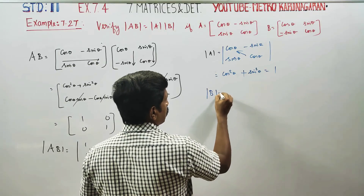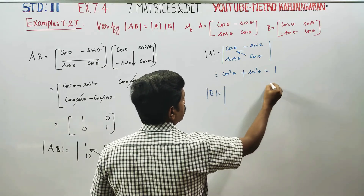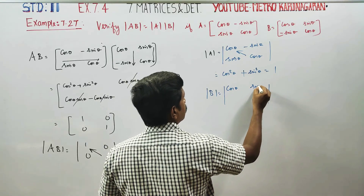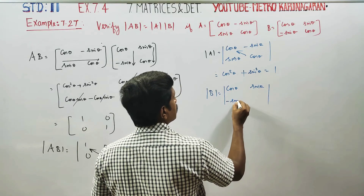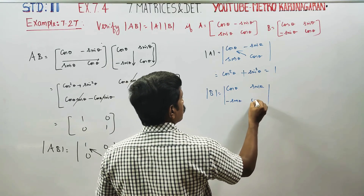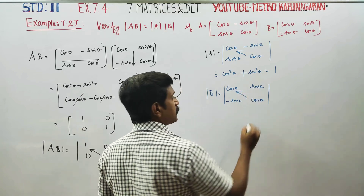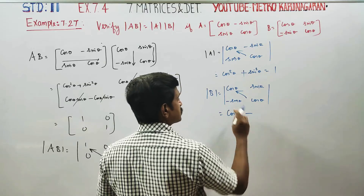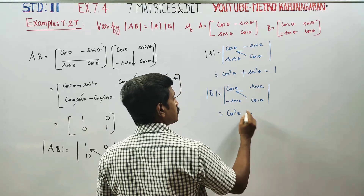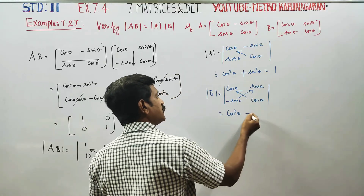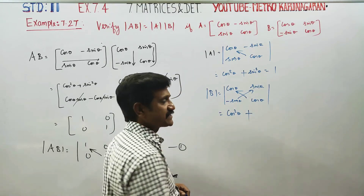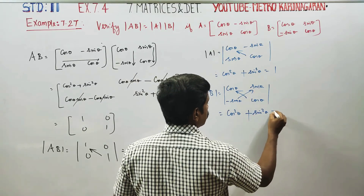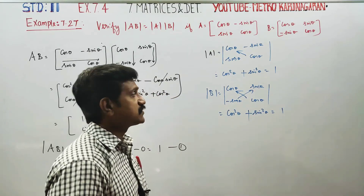Determinant of B: the matrix has cos theta, sin theta, minus sin theta, cos theta. Cos into cos is cos squared theta, minus here a minus, sin into sin is sin squared theta. Cos squared theta plus sin squared theta equals 1. So determinant of B equals 1.